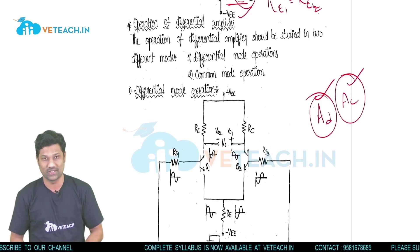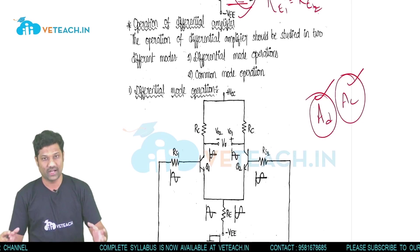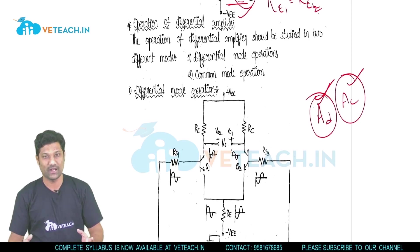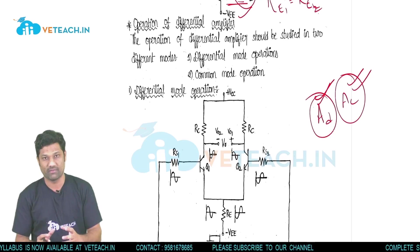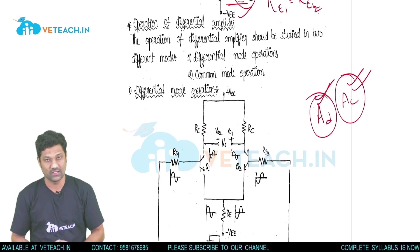The first is differential mode operation, where we provide two different inputs to the two different transistors. The second is common mode operation, where we provide similar, equal inputs to both transistors. We are going to analyze the differential amplifier in these two different modes of operation: differential mode operation and common mode operation.